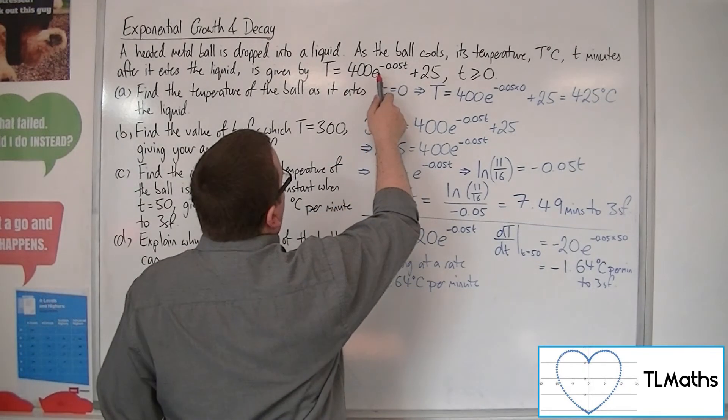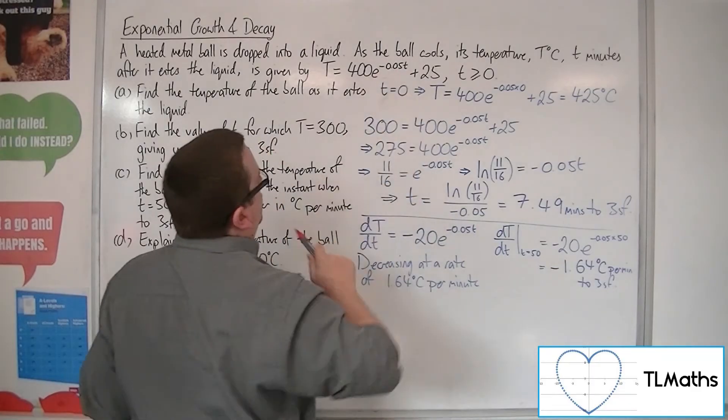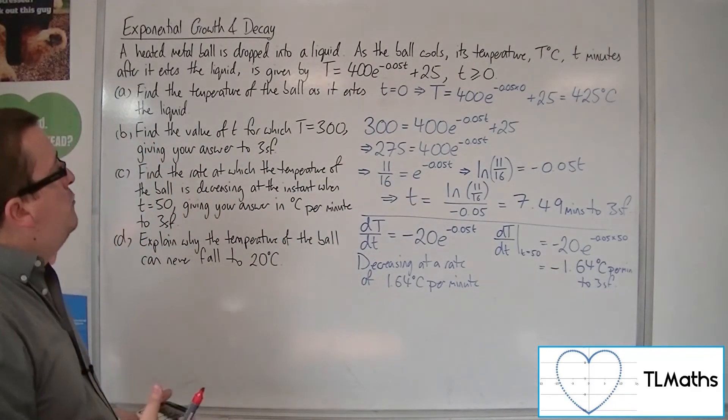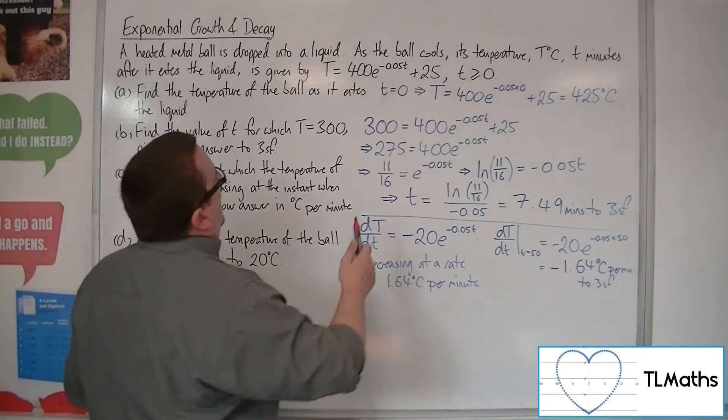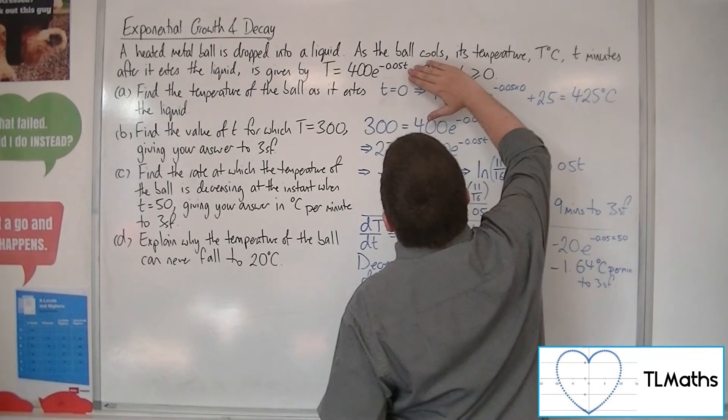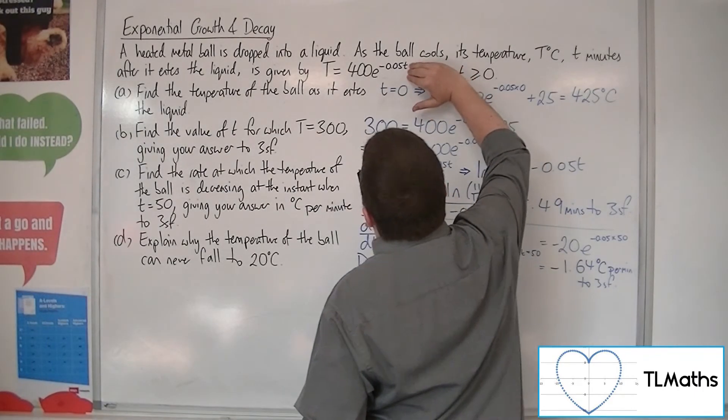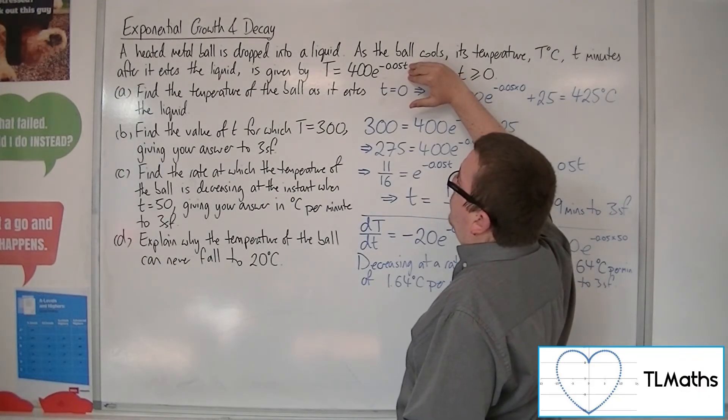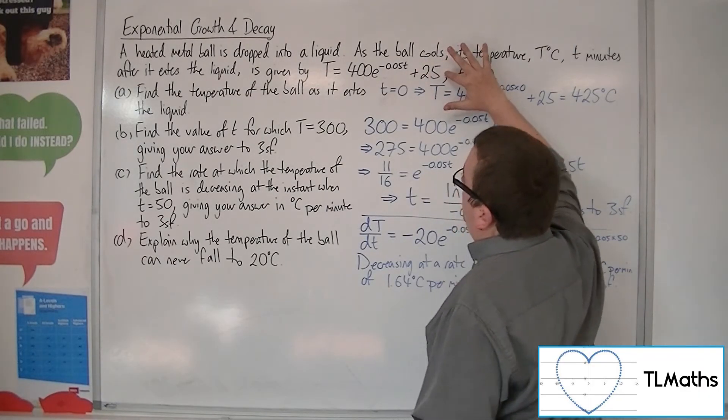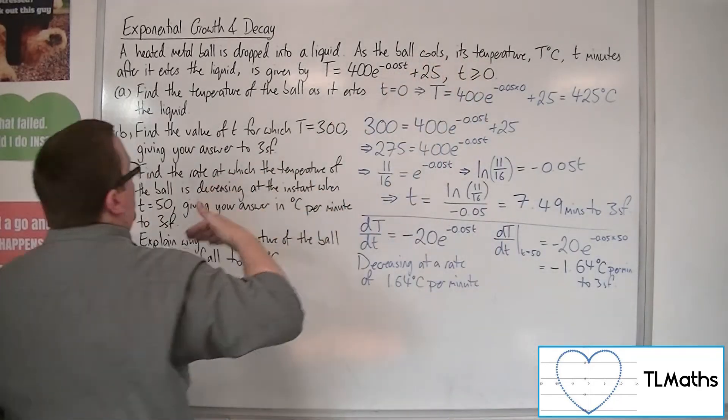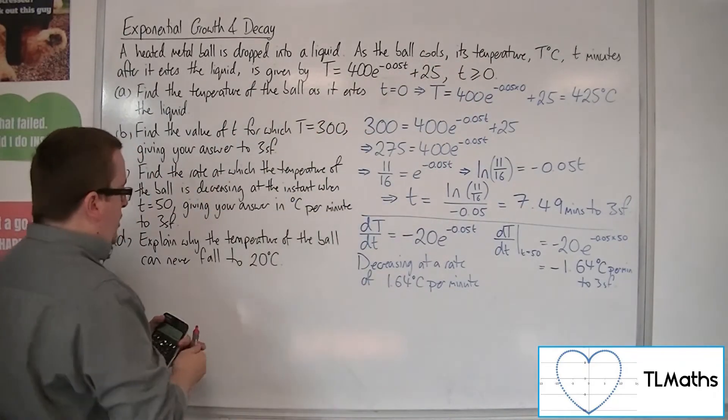Now, because e to the minus 0.05t can never be 0, if you're just looking at this, it will never reach 0. But then when you add 25 to it, that just means the temperature will never reach 25.